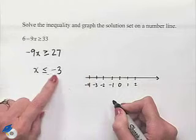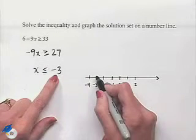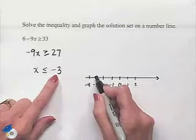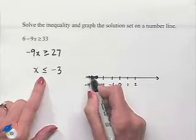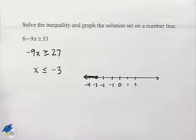We want all the values of x that are less than or equal to negative 3. That means we're going to begin at negative 3 with a closed circle since we're allowing our solution to be equal to negative 3. And then we're going to shade in to the left as we're interested in values that are also less than that point.